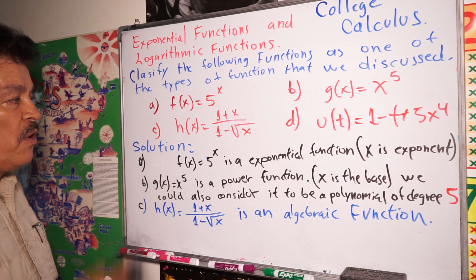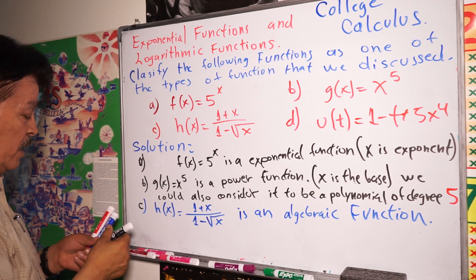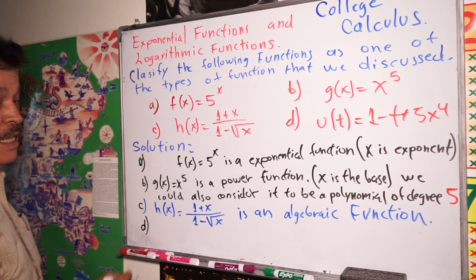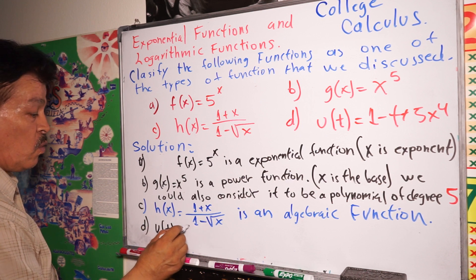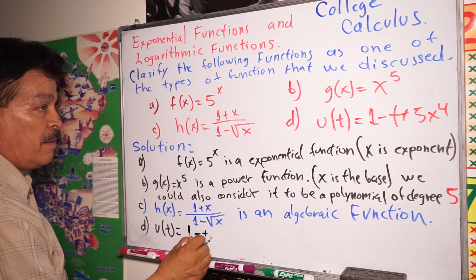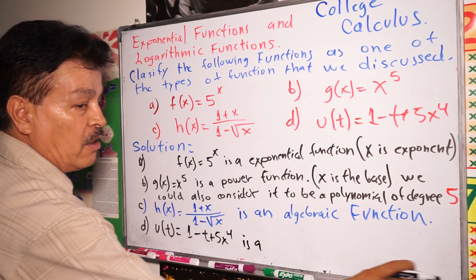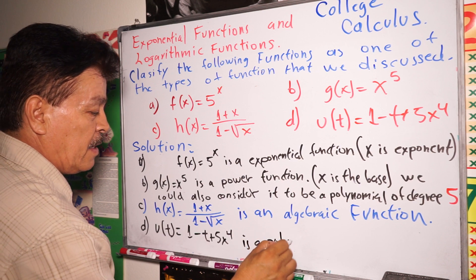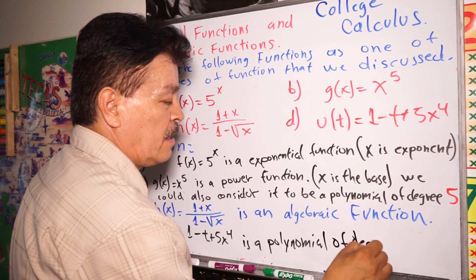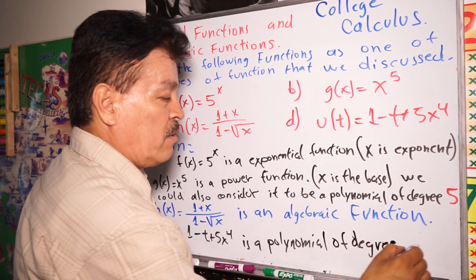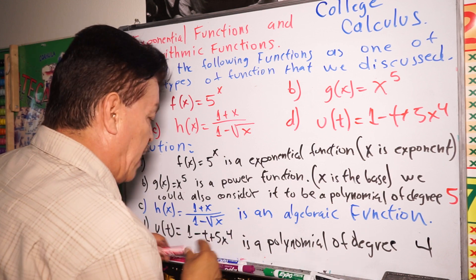This is a different type of function, but we need to know it at this point in our learning. The last one, part d: u(t) equals 1 minus t plus 5t to the fourth power. This is a polynomial of degree four.